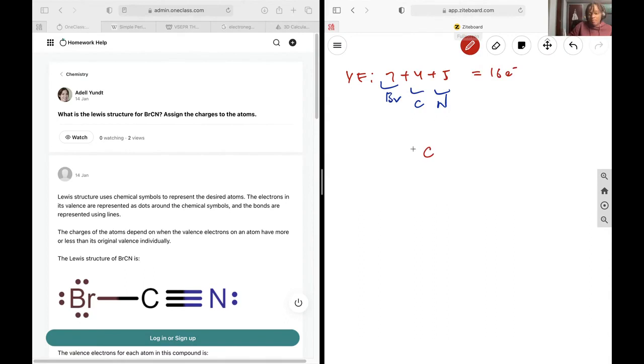I'll have carbon as my central atom, which means I'll attach the bromine to the other side and the nitrogen. I can fill in the bromine's octets, in fact, fill in everybody's, and see if I have the correct number of electrons.